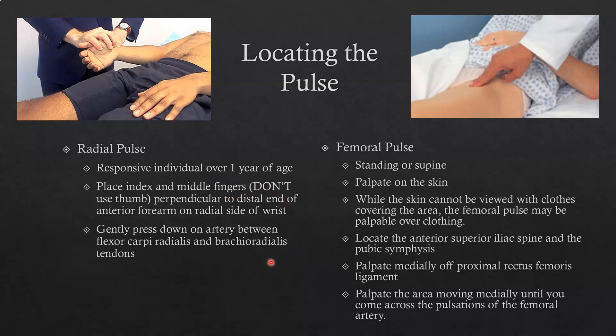Don't use the thumb — your thumb has its own pulse. You need to gently press down on the artery; firm pressure will actually occlude the artery and affect the pulse. The femoral pulse is located in the femoral triangle and can be assessed with the patient either standing or supine. Palpate the skin if at all possible, so you'll need a private room or cover, and always ask the patient before uncovering the proximal medial thigh.